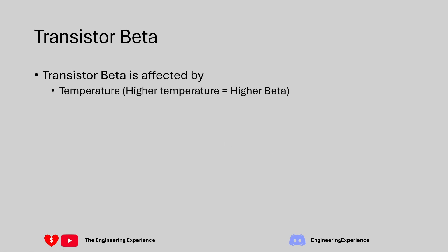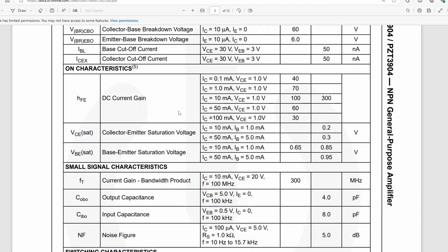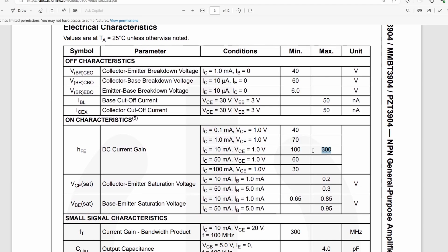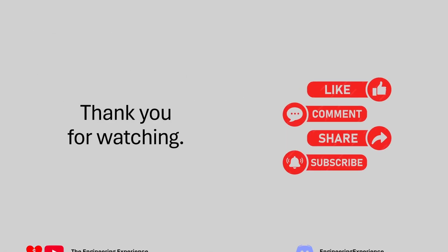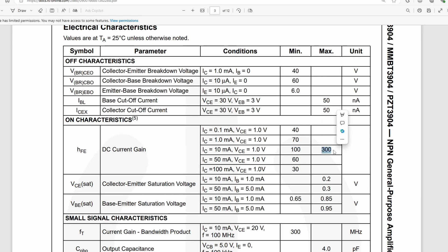The first factor is temperature: increasing operating temperature causes beta to increase. This can result from the environment or from power dissipated in the transistor itself. Another factor is collector current - beta is non-linear with collector current. Looking at the 2N3904 datasheet, DC current gain ranges from 40 at 0.1 milliamps to 100 at 10 milliamps, up to a maximum of 300. That's a large variation. Additionally, manufacturing variation means even at 10 milliamps you see a spread from 100 to 300 between components.